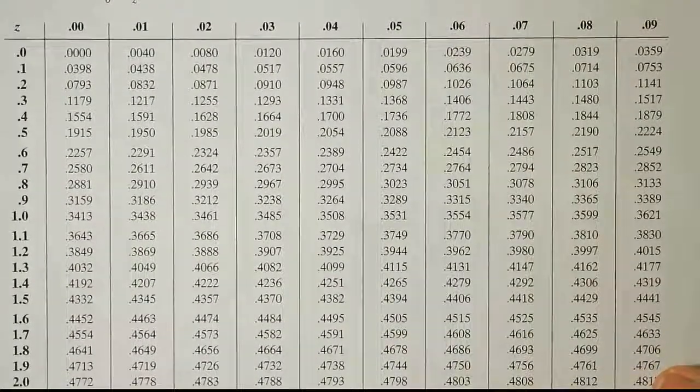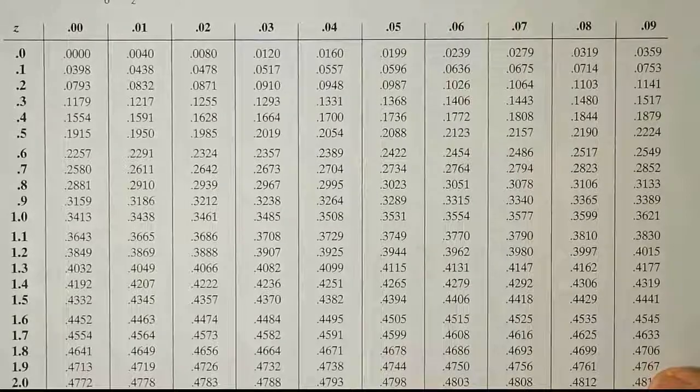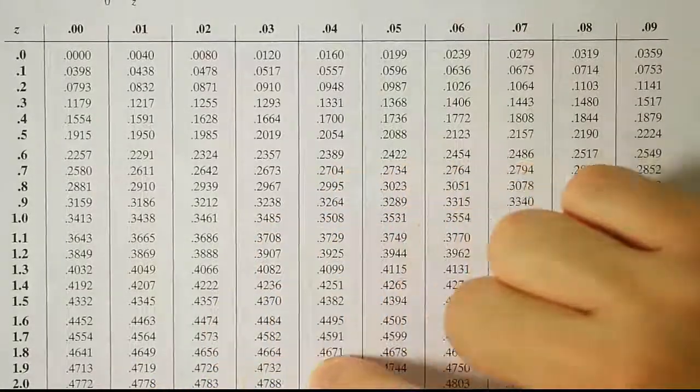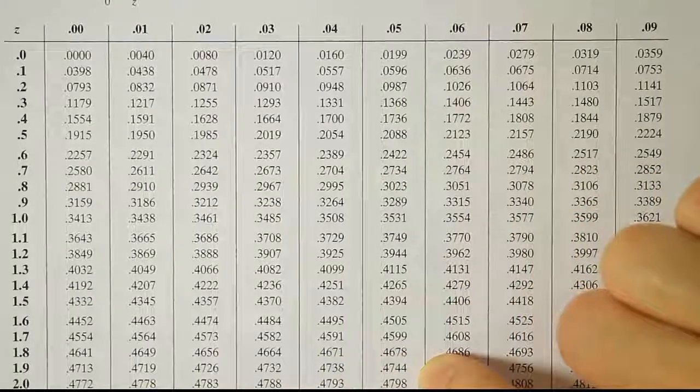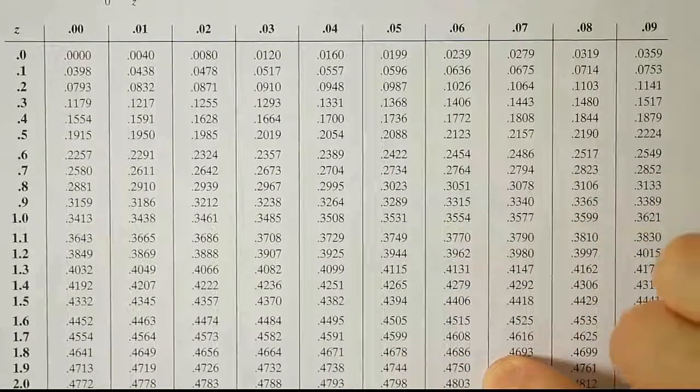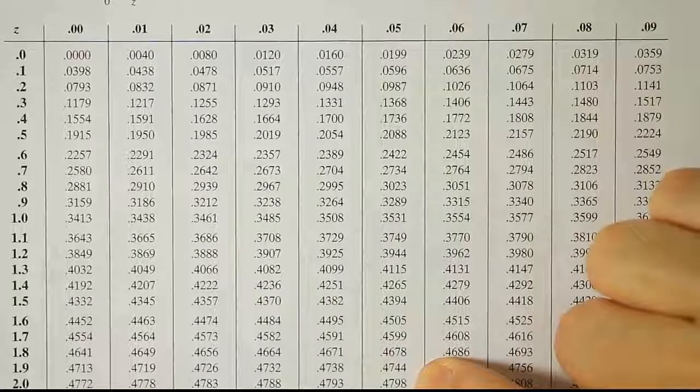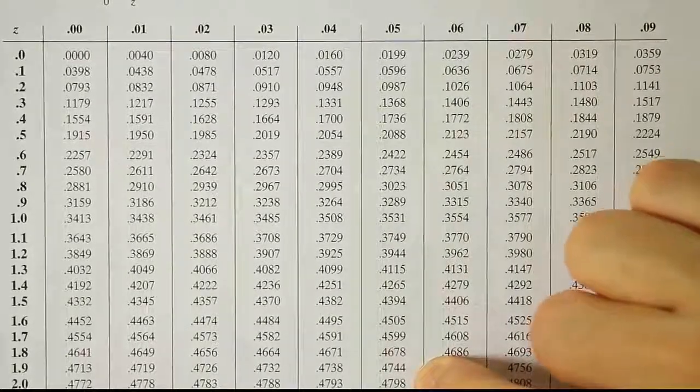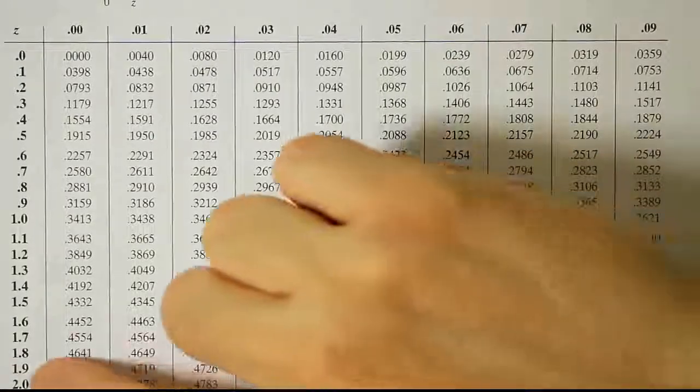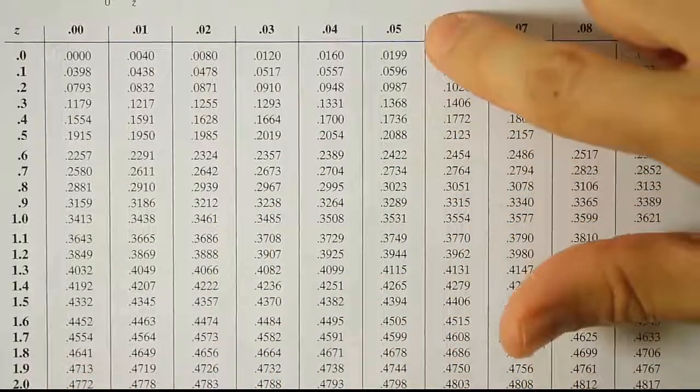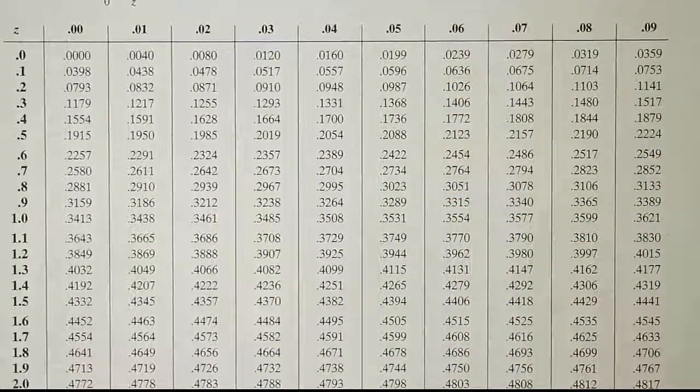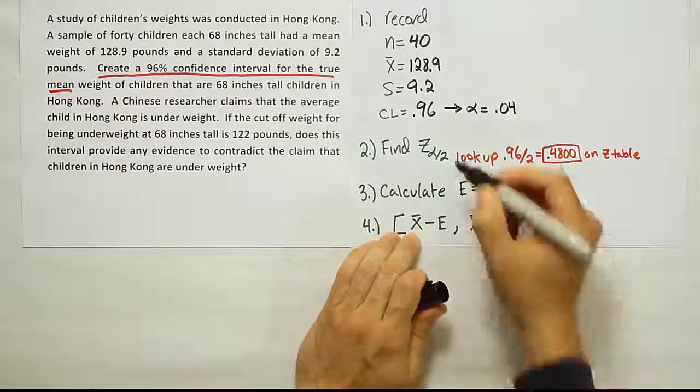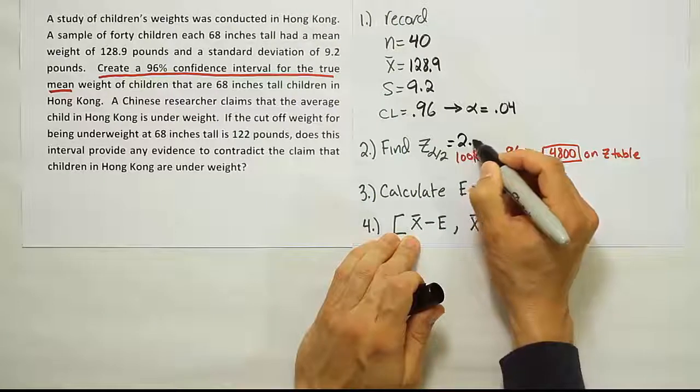up until we get to this row. Now in this row, I think if we go across, we might be able to find something close to 4,800. There's 4798, there's 4803. 4,798 is just a little bit closer than 4803, so we're going to take that value as the closest value to 4,800, and that's the z-score, 2.05. Okay, so we find the critical z-value to be 2.05.